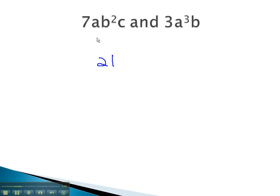As for the variables, we list all the variables, all the factors that showed up: a, b, and c.